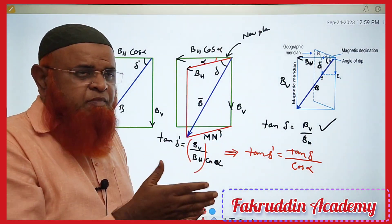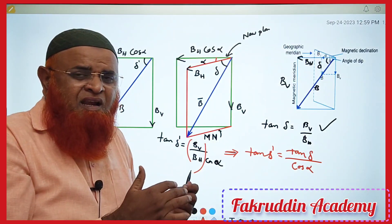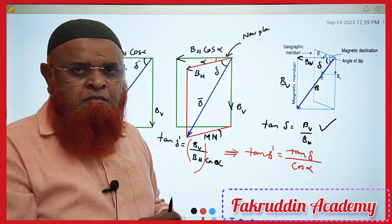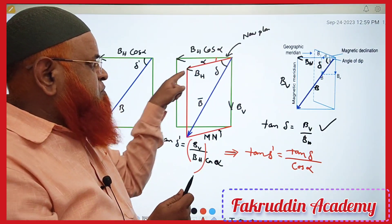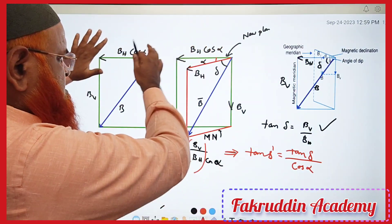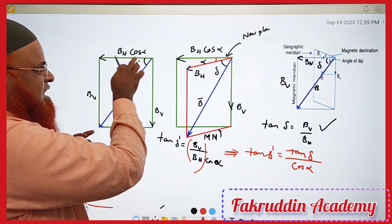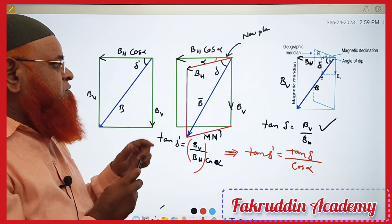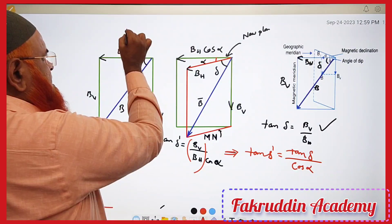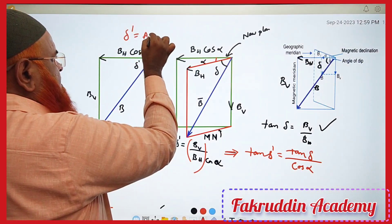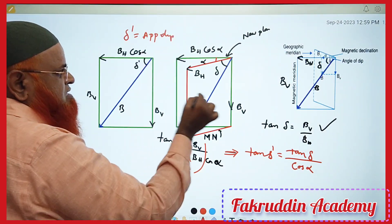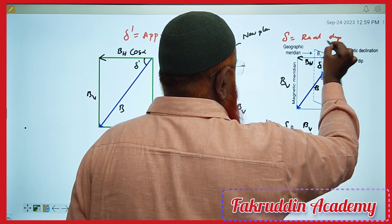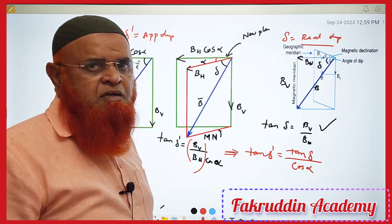Alpha is the angle between the magnetic meridian and the new imaginary plane. The angle made by the horizontal component and the resultant magnetic field in that imaginary plane is the apparent dip, delta dash. The angle delta in the magnetic meridian is the real dip. Hope you have enjoyed the topic and understood it clearly.